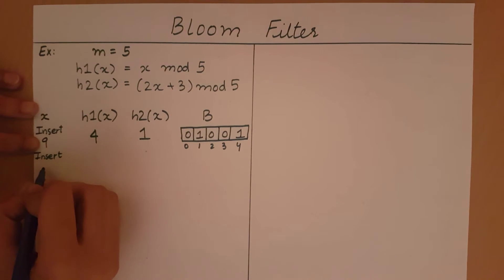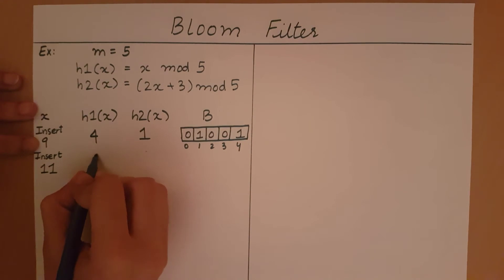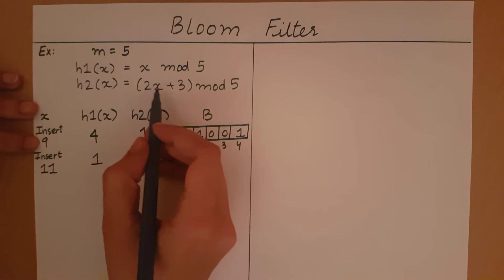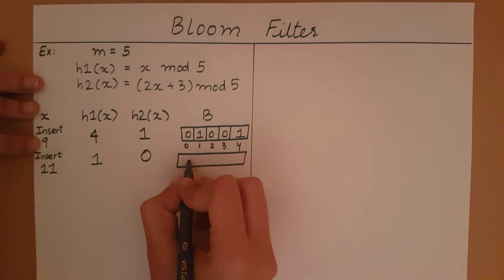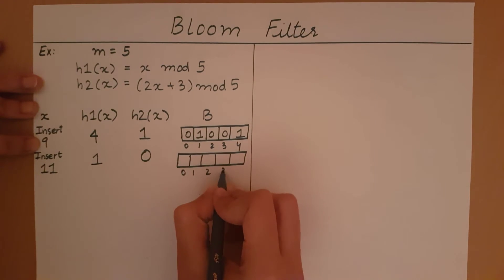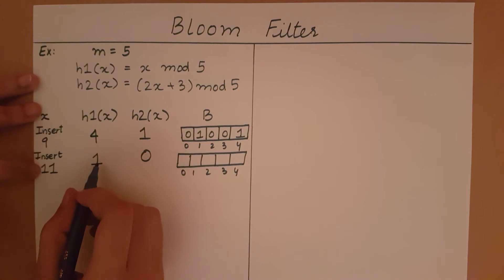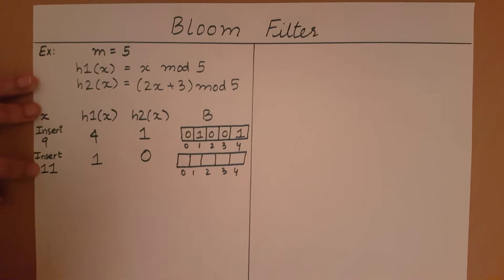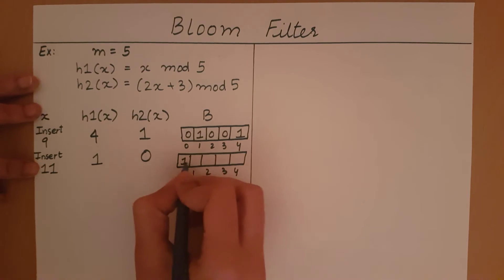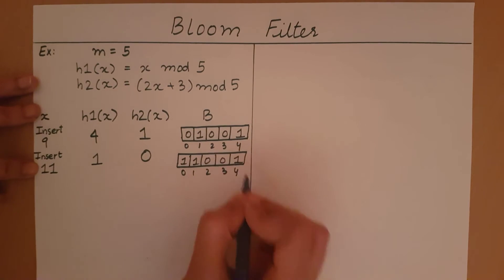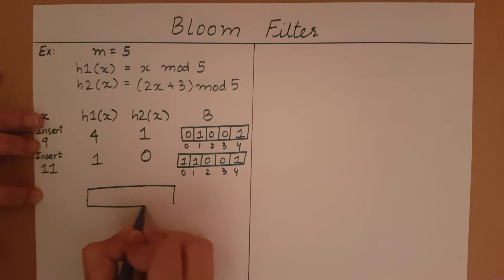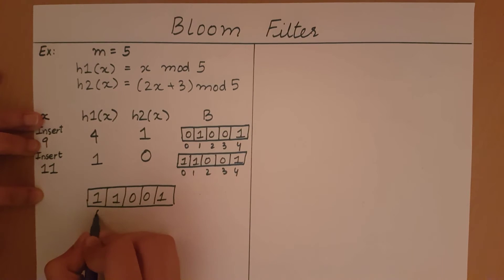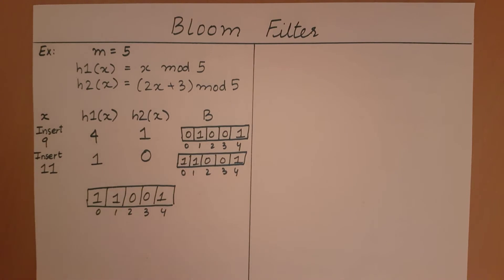Now let's insert the second element, 11. hash1(11) = 11 mod 5 = 1. hash2(11) = (22 + 3) mod 5 = 25 mod 5 = 0. Index 1 is already 1, so we leave it; index 0 gets set to 1. The state of the bloom filter after both insertions is [1, 1, 0, 0, 1]. Phase 1 is now complete.